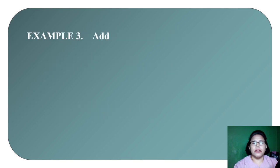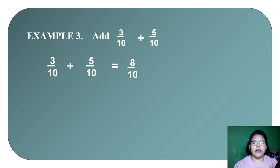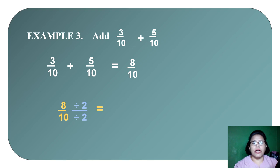Example 3: add 3 tenths plus 5 tenths. We add the numerators and copy the denominator, giving us 8 tenths. However, 8 tenths is not in its lowest term. Both 8 and 10 are divisible by 2, so 8 ÷ 2 = 4 and 10 ÷ 2 = 5. Our answer is 4 fifths. So, 3/10 plus 5/10 equals 8/10, or 4/5.